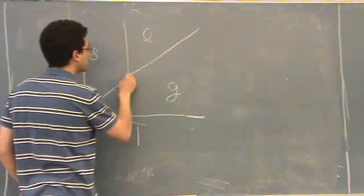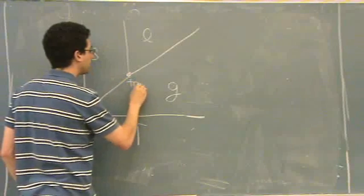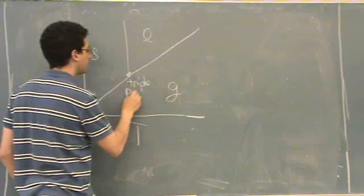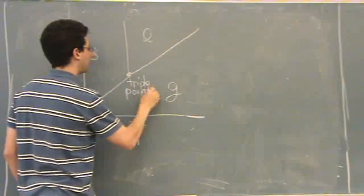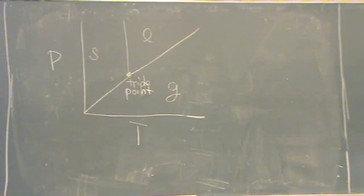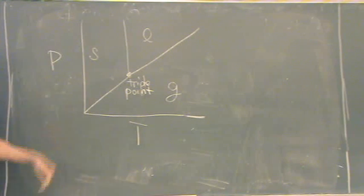This point right here is the triple point. That's where solid, liquid, and gas come together. They coexist together. That's a particular pressure, a particular temperature.